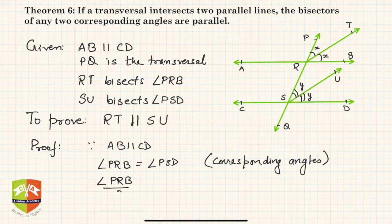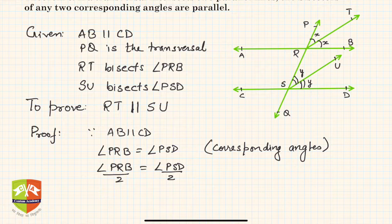If I divide these two angles by two on both sides, it will be the same. PRB by two and PSD by two. Now clearly, what is PRB by two? Angle PRB by two is nothing but angle PRT, because RT divides PRB.